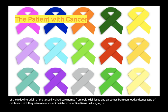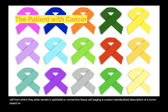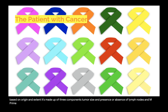Staging is a standardized description of a tumor based on origin and extent. It is made up of three components: T — tumor size; N — presence or absence of lymph nodes; and M — presence or absence of distant metastasis.